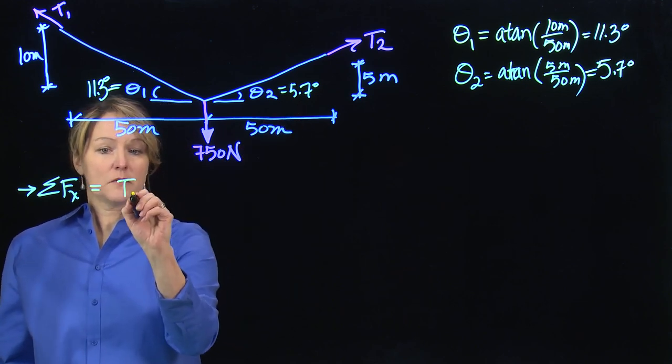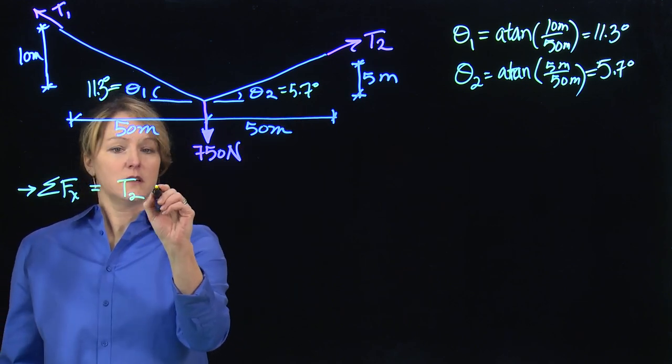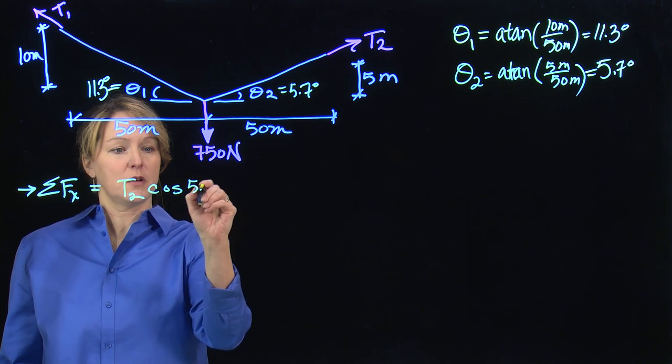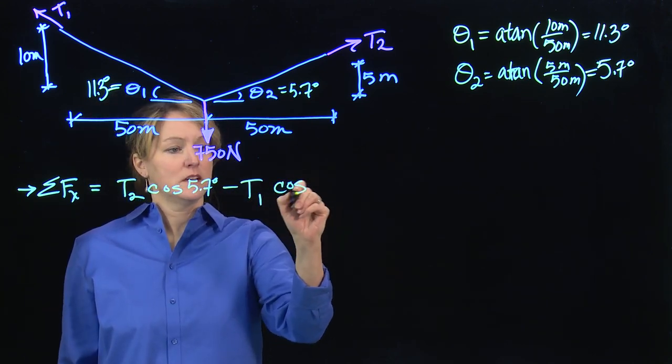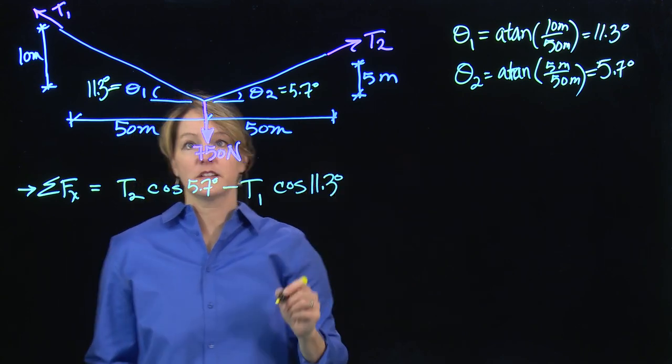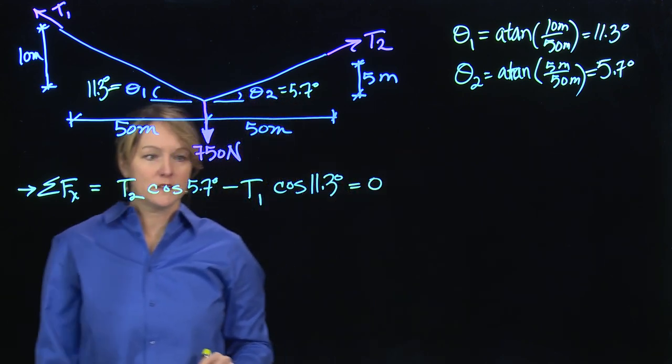So I will use that and do horizontal equilibrium and maintain the two angles. I'll start with T2 times the cosine of that smaller angle, 5.7 degrees, minus T1 times the cosine of 11.3 degrees. That's all that's acting horizontally, and that equals zero.